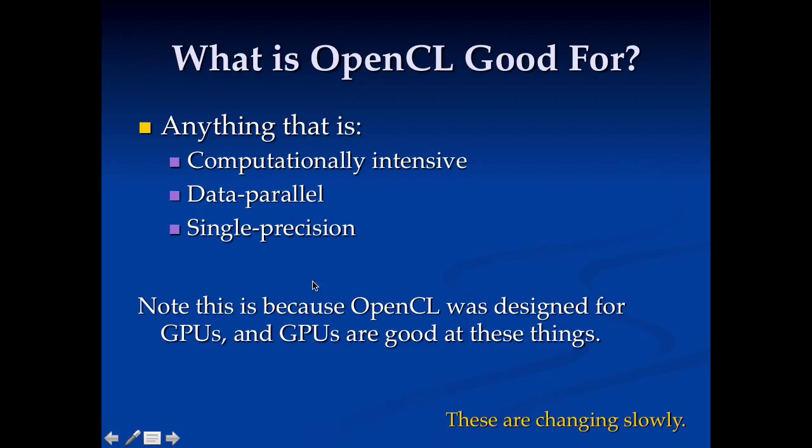So it is important to point out these things are changing slowly. So we've gotten to the point where we have double precision support on most desktop GPUs, but it's still pretty slow. So newer GPUs are starting to support task parallel execution, but it's incredibly inefficient, and you really want to avoid it if you can.